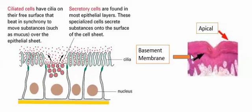The reticular lamina is collagen found in connective tissue, and it is bound to another connective tissue called areolar connective tissue. Together, this structure is called the basement membrane.